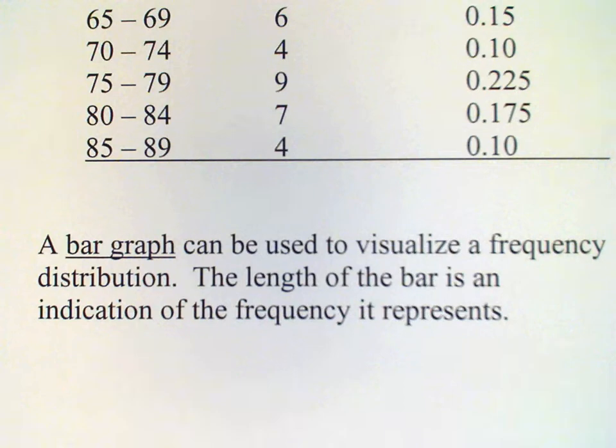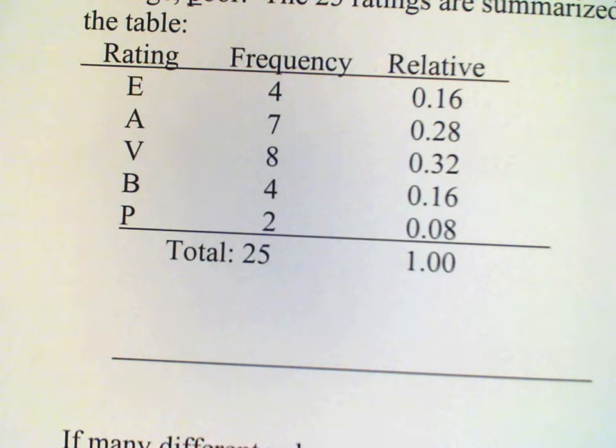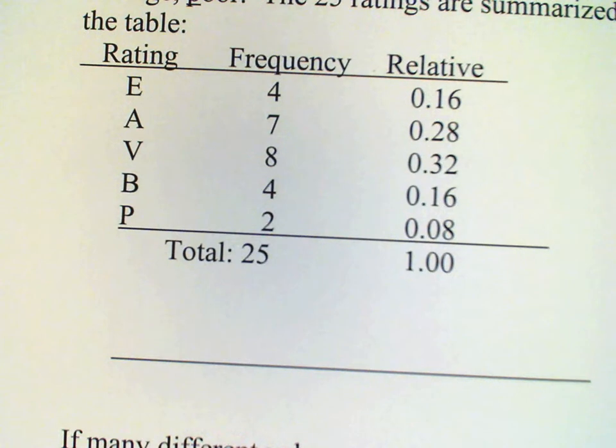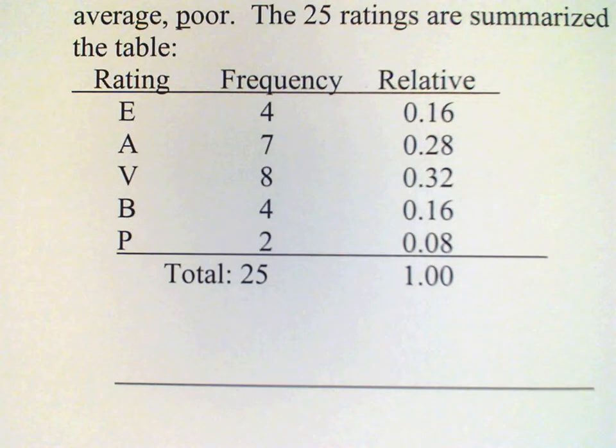So I'd like to remind you about the example I showed in the previous video clip with those viewer ratings of the TV programs. We had 25 viewers and they gave ratings E, A, V, P, and B. Let me just put that up for you again so you can remind yourself about that. And that was the frequency distribution that we had for this example here.